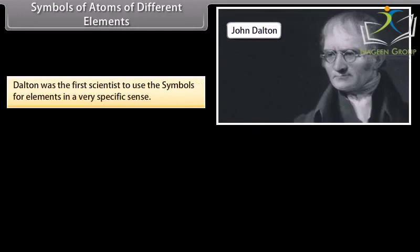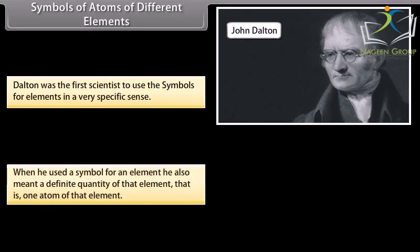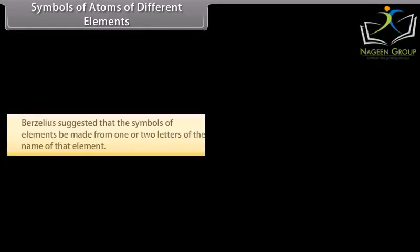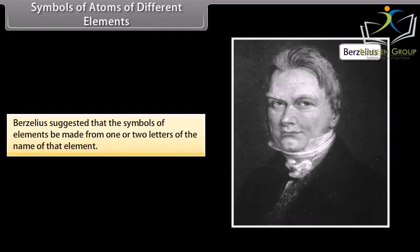Symbols of atoms of different elements. Dalton was the first scientist to use the symbols for elements in a very specific sense. When he used a symbol for an element, he also meant a definite quantity of that element, that is, one atom of that element. Berzelius suggested that the symbols of elements be made from one or two letters of the name of that element.